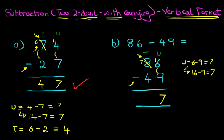Now we're going to do the tens. We've got 7, not 8 anymore, but 7. So tens is 7 tens minus 4 tens. 7 minus 4 is 3. And that's our answer. So 86 minus 49 is 37.